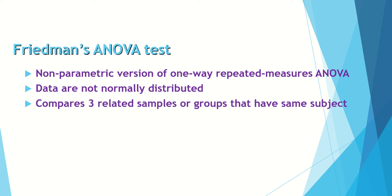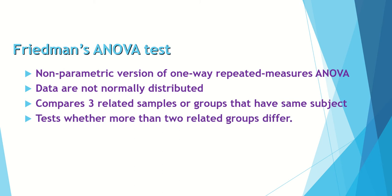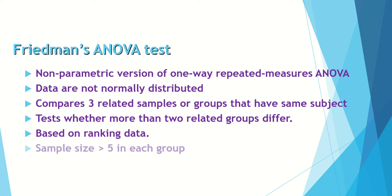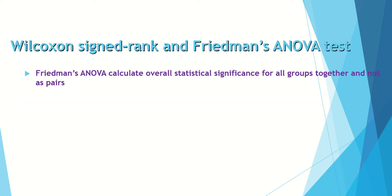The test compares three related samples or groups that have the same subjects — meaning one participant's measurement is taken at different specific time points. It tests whether more than two related groups differ. The test is based on ranking: actual data are taken and put into ranks, so the test works on rank data rather than the actual data. The sample size has to be greater than five measurements in each group.